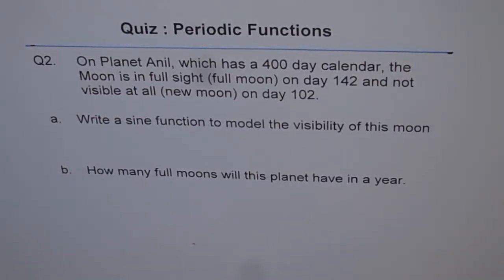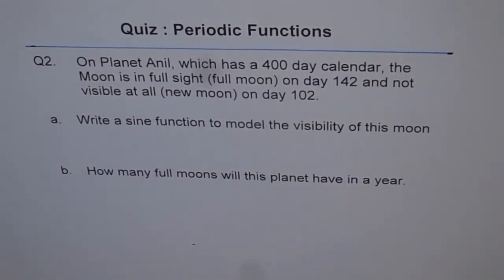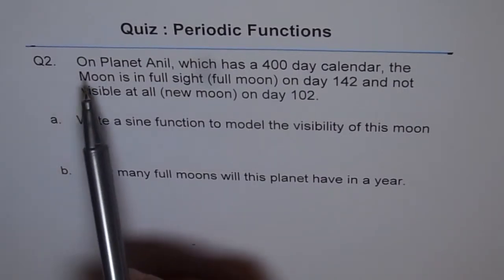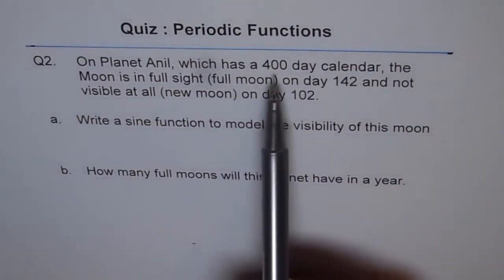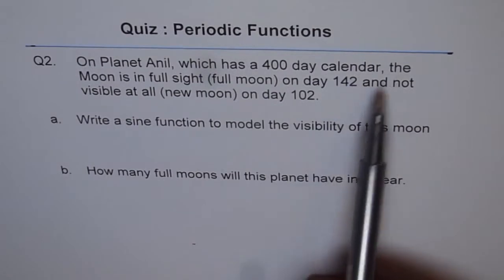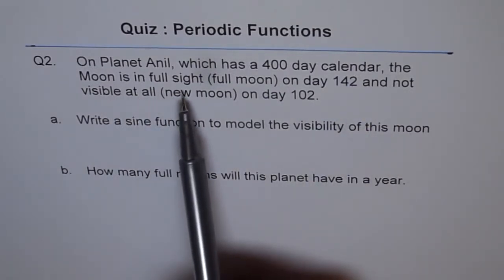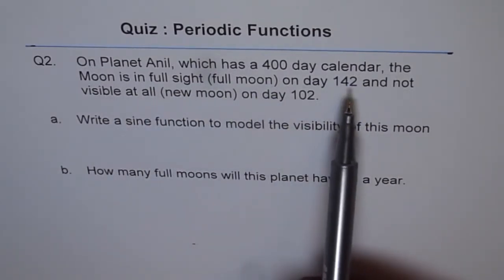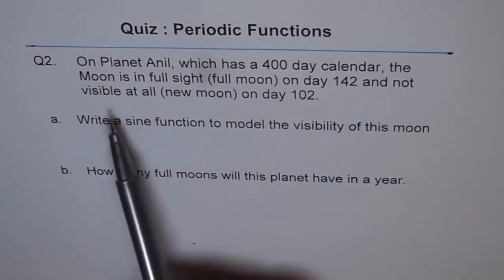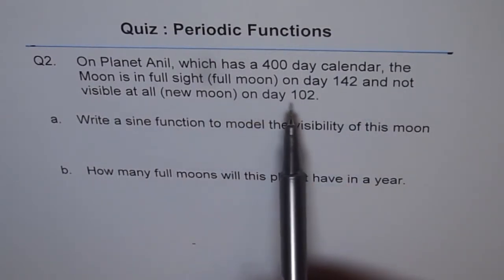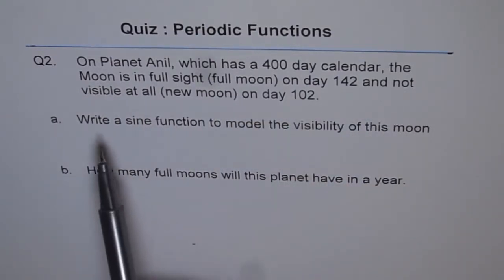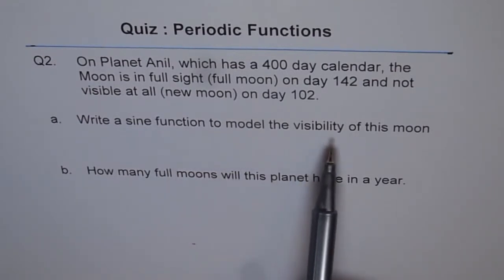Solution to question 2 of the quiz on periodic functions. On planet Anil, which has a 400 day calendar, the moon is in full sight on day 142 and not visible at all on day 102. Write a sine function to model the visibility of this moon.